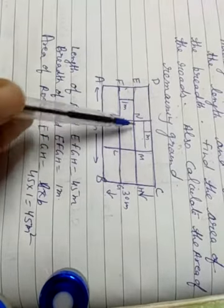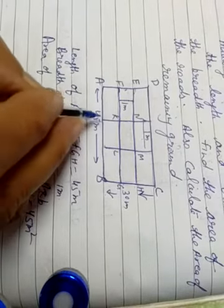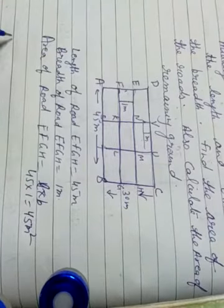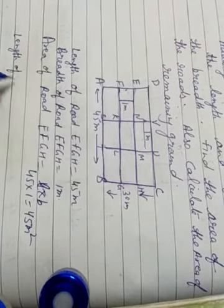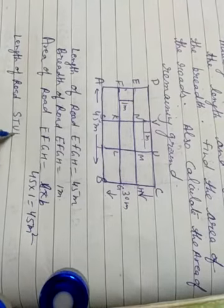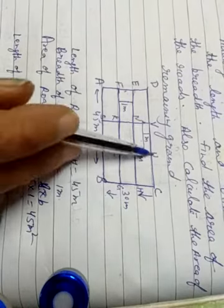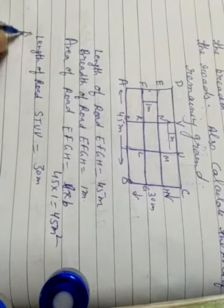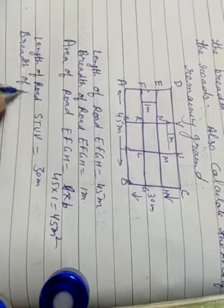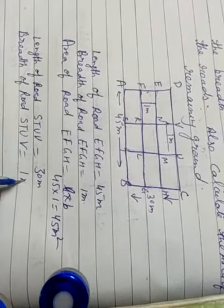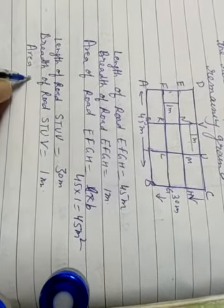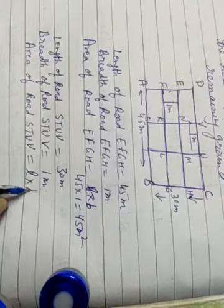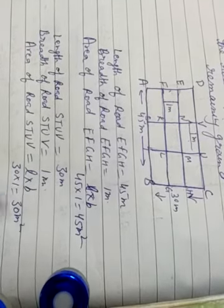Now area of road STUV. We take length of road STUV equal to 30 meters and its breadth is 1 meter. So: length of STUV is 30 meters and breadth of road STUV is equal to 1 meter. Area of road STUV is equal to L into B: 30 multiplied by 1 is equal to 30 meter square.